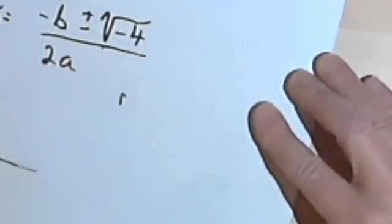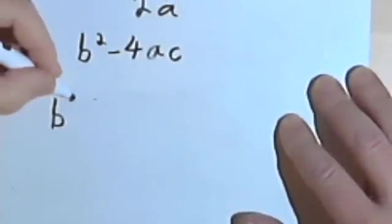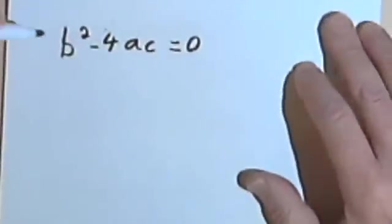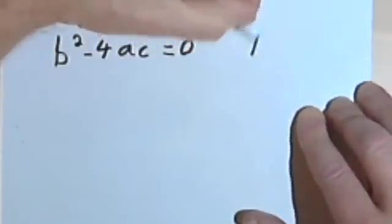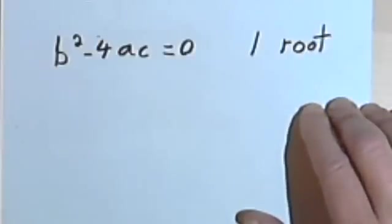So summing this up, what I've got is this. If b squared minus 4ac equals zero, then there's one root, one real solution, one horizontal intercept.